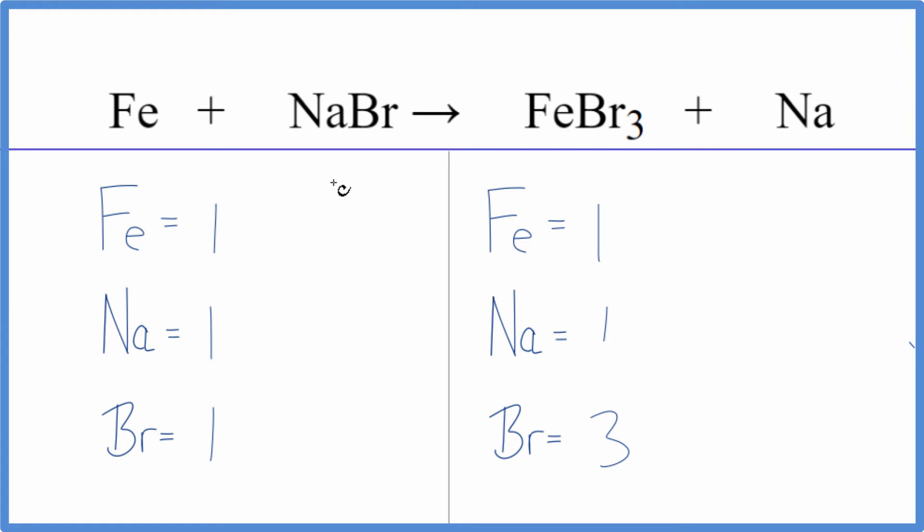It looks like what we need to do is put a coefficient here in front of the NaBr. So one times three, that gives us three sodium atoms. This three goes to everything. So one times three. That'll give us three bromine atoms. So those are balanced.